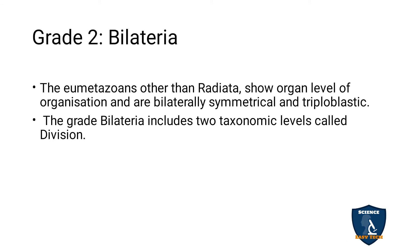Bilateria is the other grade in Eumetazoa, where an organ-level organization is seen. It has bilateral symmetry — you can cut at one point only and get two equal halves. Bilateria animals are triploblastic, meaning they have three layers: endoderm, mesoderm, and ectoderm.